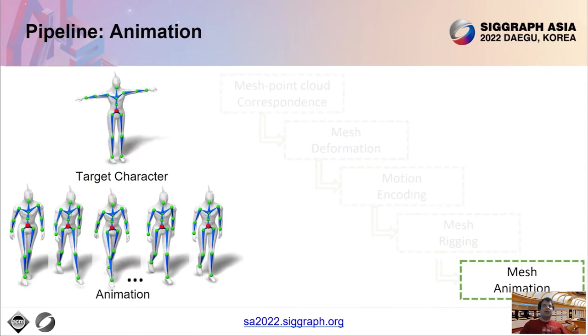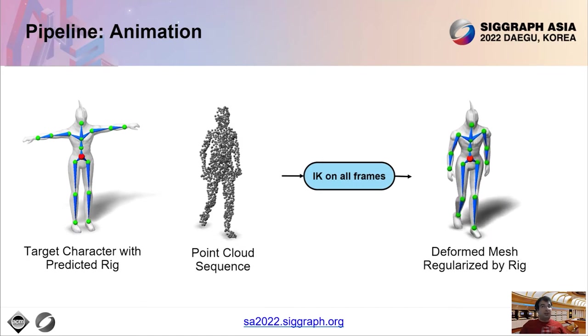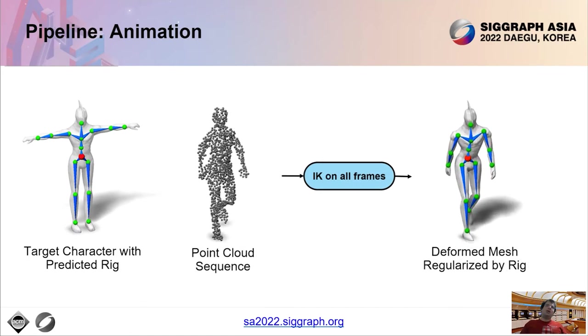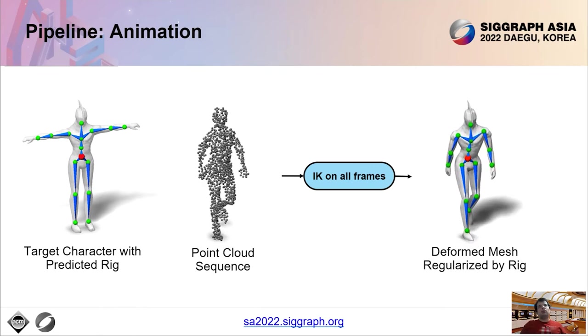Given the predicted rig, the next step is to animate it. Here, we apply full-body inverse kinematics to compute joint angles such that the rigged mesh follows the previously deformed mesh as closely as possible. By applying the same procedure iteratively to all the frames, we obtain an animation sequence closely following the input point cloud motion.